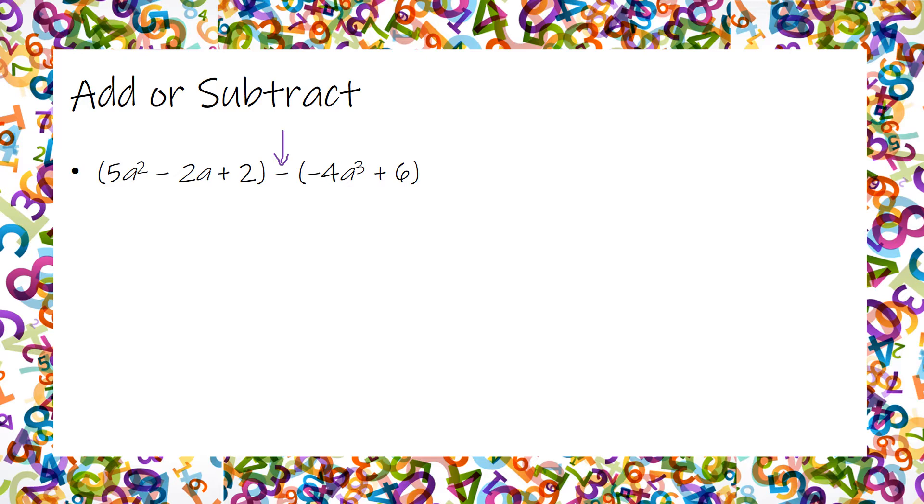So I'm going to find all of the a cubes. This is the only one. So I have to say 0 minus negative 4a cubed. Minus a negative is the same as plus a positive, so we get 4a cubed.